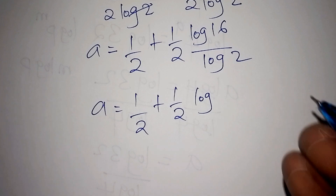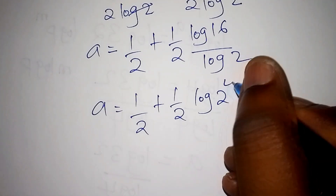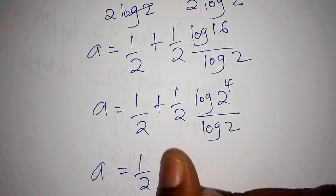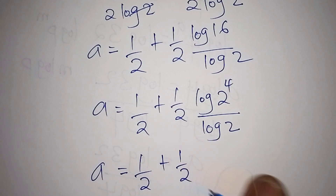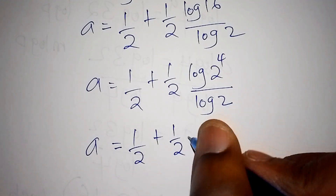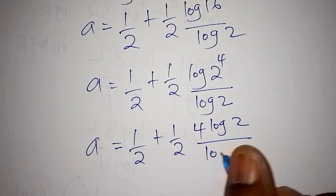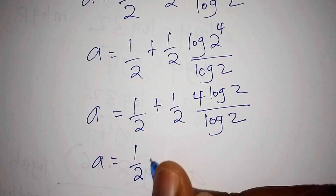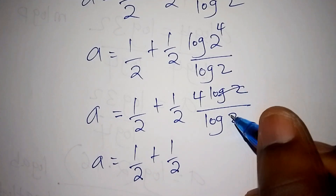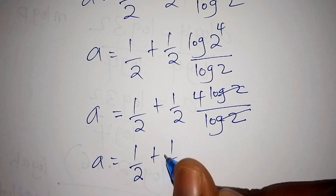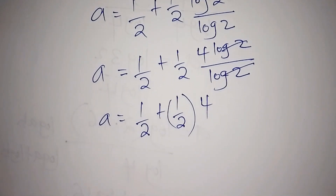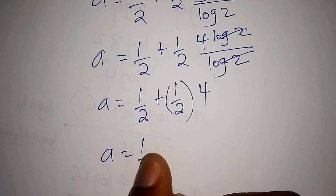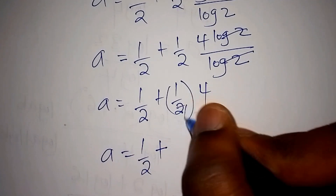So here now our a shall be equals to 1 over 2 plus 1 over 2. We shall say that we have 4 log 2 all over log 2. So log 2 and log 2 shall cancel, then multiply by 4. So this one is 2, plus 2. So our value for a is 1 over 2 plus 2.